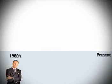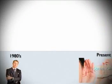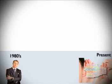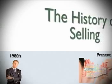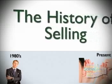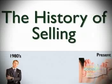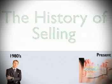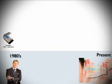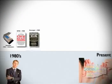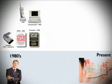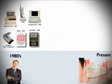Before we get into what's happening today, let's talk about what's happened in the past. It's important to understand that these strategies are cumulative — they're building on each other. We started out in the sales process with Rolodexes, then we went into SPIN selling, strategic selling, and technology started being introduced: cell phones, laptops, desktops.